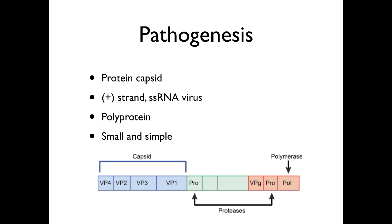Pathogenesis. This organism is a picornavirus. It's similar in structure to the poliovirus, which causes a more serious illness. It's a very simple virus. It's small. It has a capsid of 20 interlocking pieces. Each of these pieces are made up of five proteins.